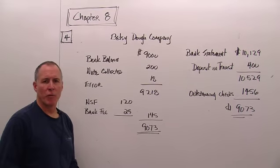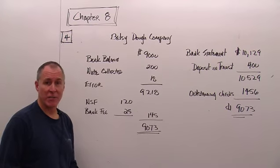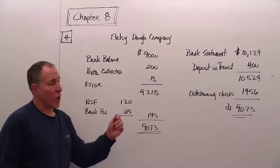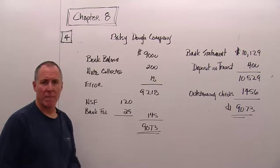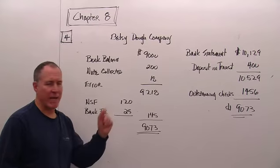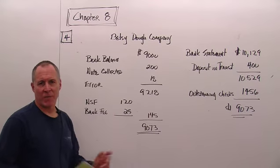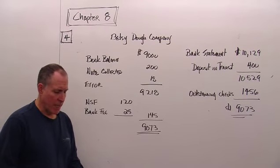Now, we shouldn't get overjoyed and say, hey, well, I've got another $1,129 because we might have written some checks here on the books, mailed them, and they've yet to clear the bank. So, we cannot spend that difference. That difference has to be reconciled. And so, in looking at the problem, we see here in number one,